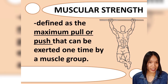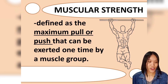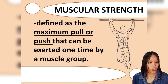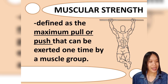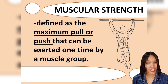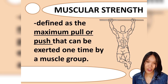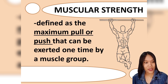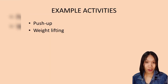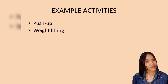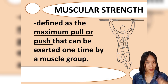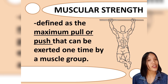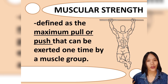Muscular strength is the first health-related component. It is defined as the maximum pull or push that can be exerted one time by a muscle group. For example, when you perform an activity giving your very best using your muscles, that is muscular strength. Example activities for measuring it include push-ups and pull-ups — reflecting the pull or push in the definition.